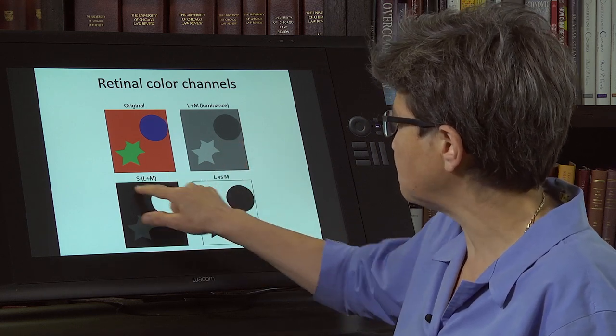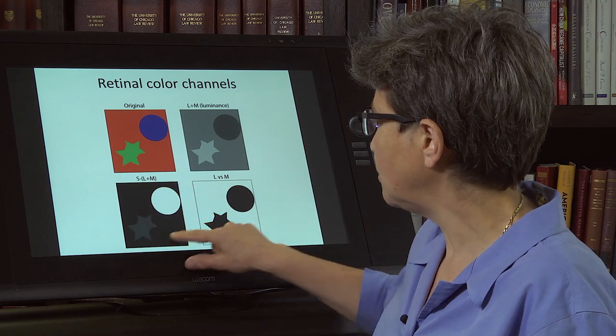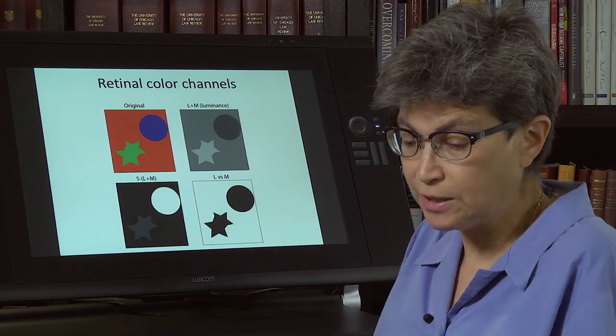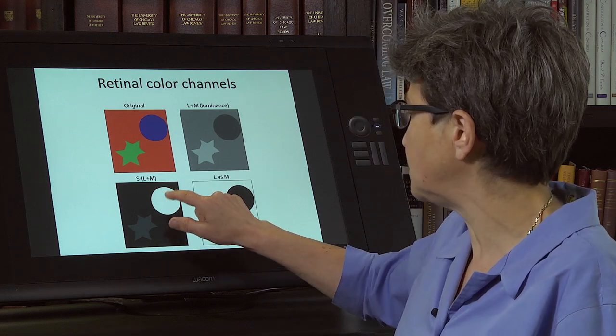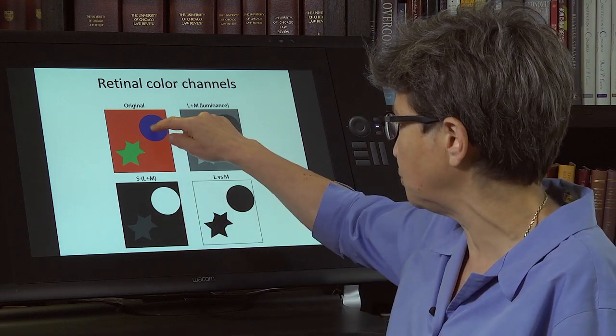Here is the S minus L plus M channel. This is the channel that's going to enable you to detect blue things. And it's responding most to this blue circle.